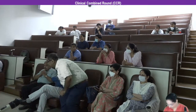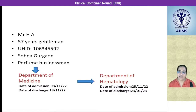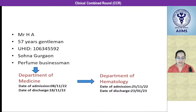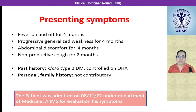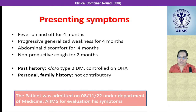It's a case of a 57-year-old gentleman, a resident of Sohna, Gurgaon, who was a perfume businessman. He presented initially to the Department of Medicine and was admitted from 8th to 18th of November. He presented with fever on and off for 4 months, associated with progressive generalized weakness, abdominal discomfort, and non-productive cough for 2 months. His past history was significant for well-controlled type 2 diabetes on oral hypoglycemic agents.